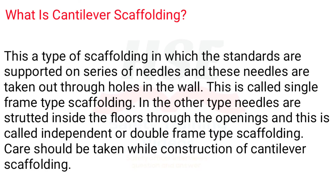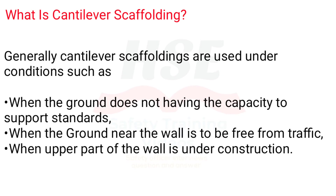What is cantilever scaffolding? In cantilever scaffolding, standards are supported on a series of needles taken out through holes in the wall — this is called single frame type. In another type, needles are strutted inside the floors through openings — called independent or double frame type. Cantilever scaffolding is generally used when the ground cannot support standards, when the ground near the wall must be free from traffic, or when the upper part of the wall is under construction.